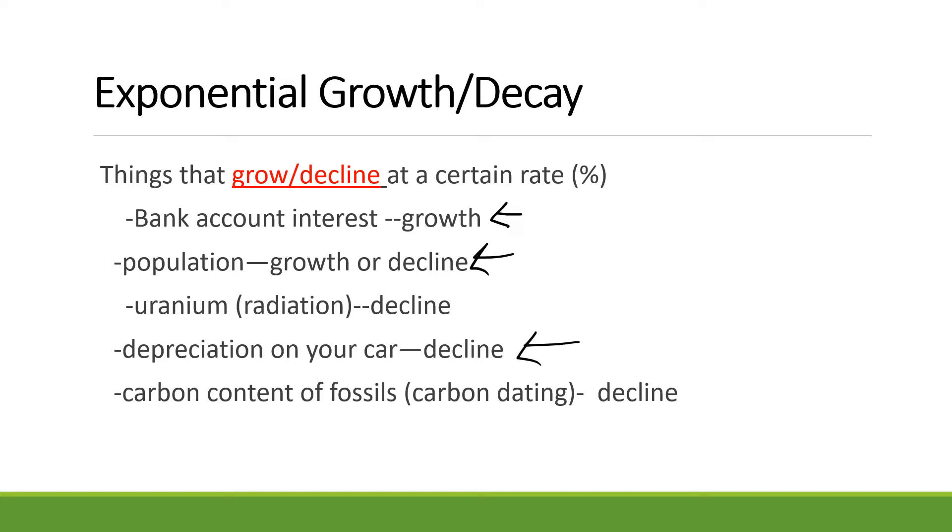Even more relatable, the depreciation of your car. When you buy a car it's worth so much, you drive it off the lot the value goes down, the value goes down, and very quickly it just sort of stays as a very low value. Carbon dating is another example you might have heard of that represents exponential decay.